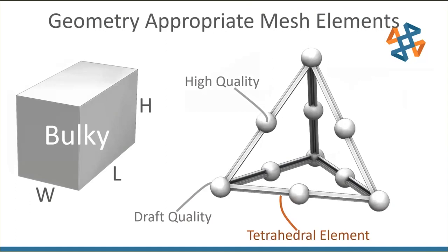The reason draft quality exists is that it runs faster. The more nodes there are, the more equations need to be solved, and the longer it takes to run. Draft quality is useful when you're running a very large analysis and just need quick results to verify everything is moving as expected, before later switching to high quality.